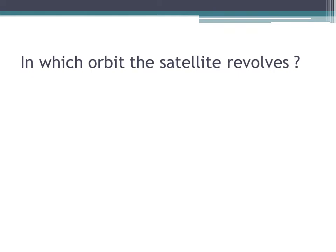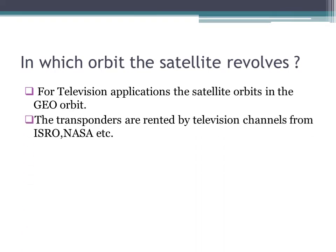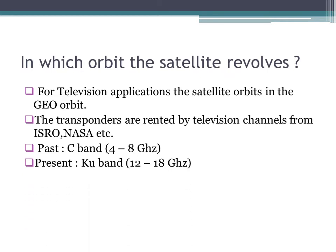In which orbit does the satellite revolve around the earth? For television applications, the satellite is revolving around the earth in geosynchronous earth orbit — in short, geo-orbit. The transponders are rented by television channels from NASA, ESRO, and similar organizations. In earlier days, we were using the C band at a frequency of 4 to 8 GHz, and large-sized antennas were used to receive electromagnetic waves from the satellite. Nowadays, we are using the KU band at a frequency of 12 to 18 GHz, which allows us to receive electromagnetic waves directly from the communication satellite using small-sized antennas called a dish.